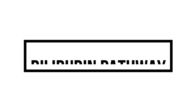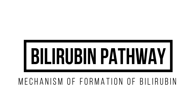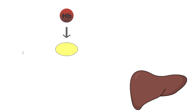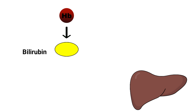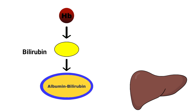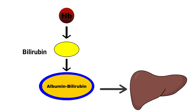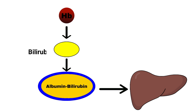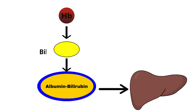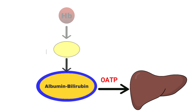Now let us take a rapid look at how hemoglobin is converted into bilirubin, and further how it is conjugated in the liver and excreted through bile. Initially, hemoglobin molecule degradation occurs and bilirubin is formed. Bilirubin gets conjugated with albumin and is carried over to the liver. Before entering the hepatocyte, the albumin molecule is detached and bilirubin enters the hepatocyte with the help of OATP.